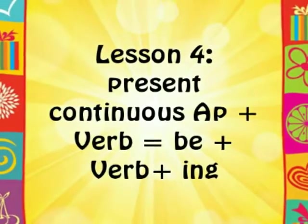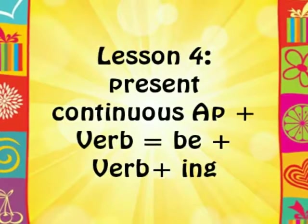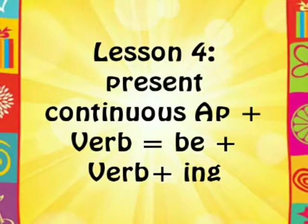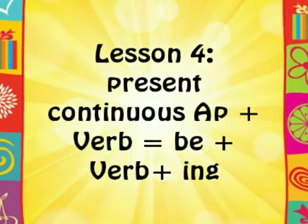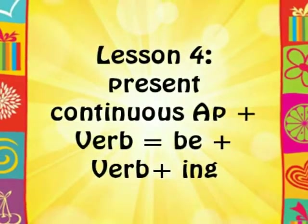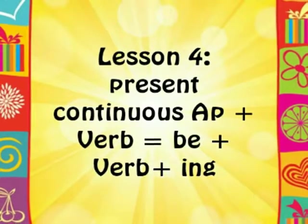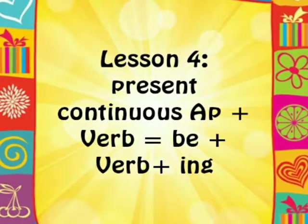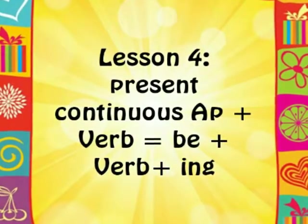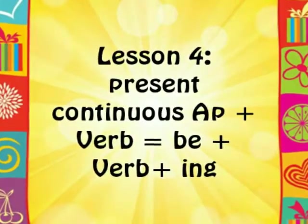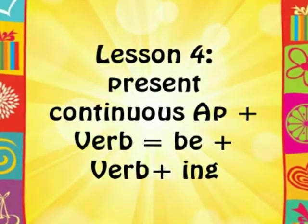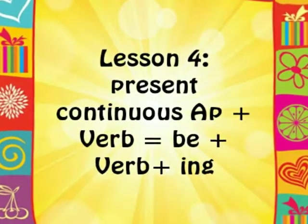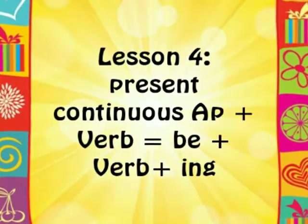More than 80% of Haitians use a contracted construction for the present continuous, formed by linking the first letter of the subject pronoun to 'ap' separated by an apostrophe. Example: M'ap manje. W'ap manje. L'ap manje. N'ap manje. N'ap manje. Y'ap manje.